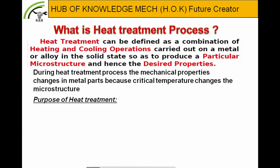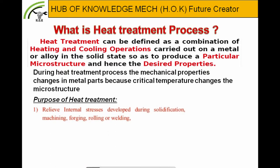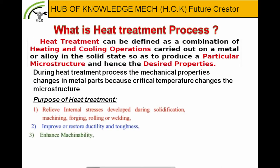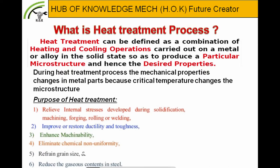The purposes of heat treatment are: first, to relieve internal stresses developed during solidification, machining, forging, rolling or welding. Second, to improve or restore ductility and toughness. Third, to enhance machinability of steel parts. Fourth, to eliminate technical non-uniformity created due to disturbance of microstructure. Fifth, to refine grain size. Sixth, to reduce the gaseous contents in steel.